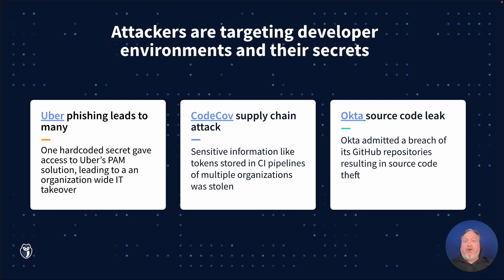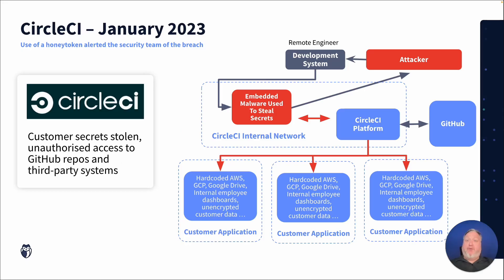One common tactic in all these attacks is that bad actors exploit any credentials they find once they breach the perimeter. For example, in January 2023, CircleCI unexpectedly rotated their platform secrets due to an attacker compromising an engineer's development system.